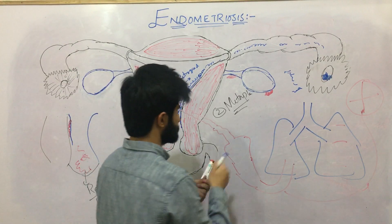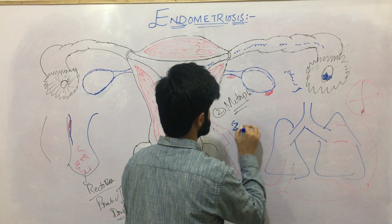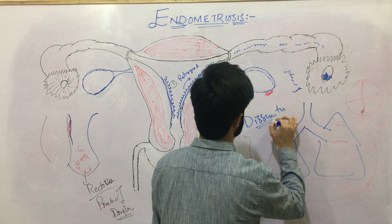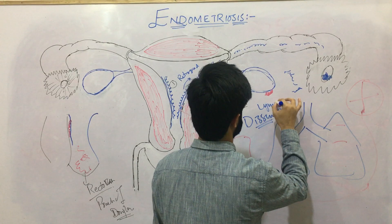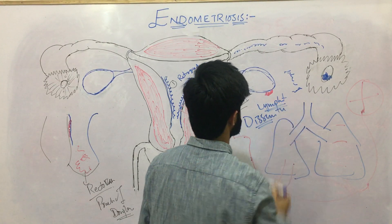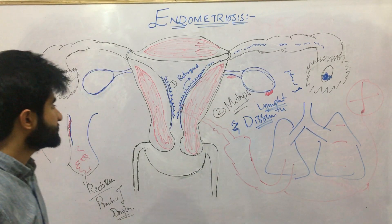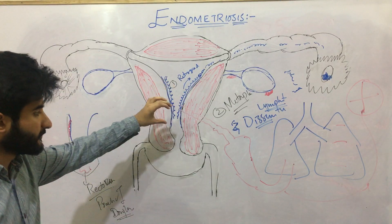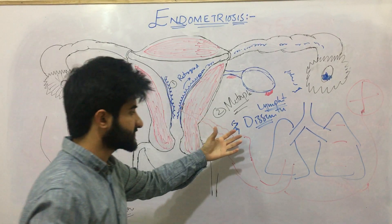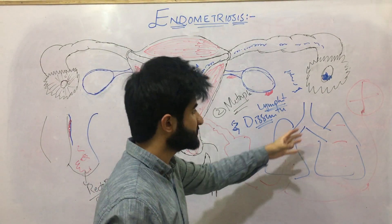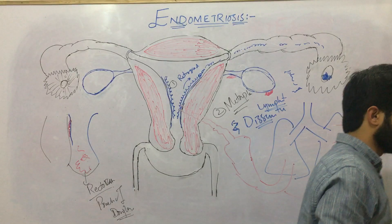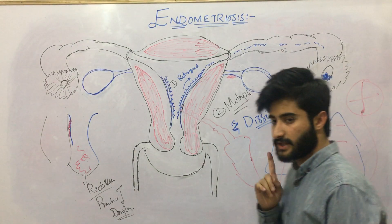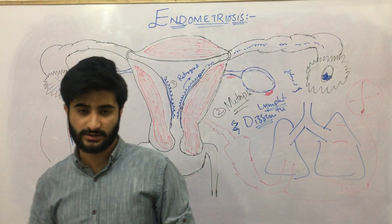To explain spread to distant organs like the lungs and heart, a fourth theory was proposed: the dissemination theory, also called hematogenous or lymphatogenous spread. This states that endometrial tissue is carried by blood vessels or the lymphatic system to distant sites such as the lungs and heart.